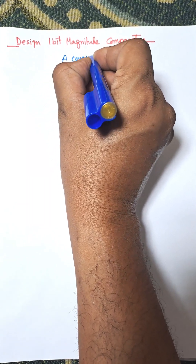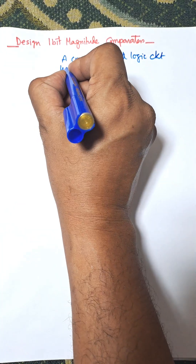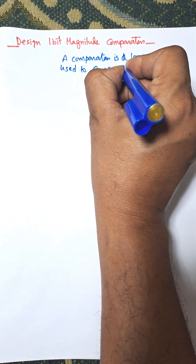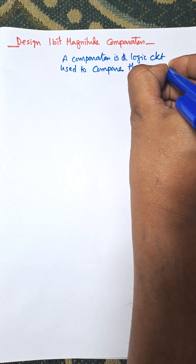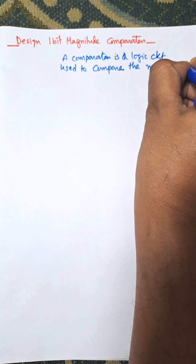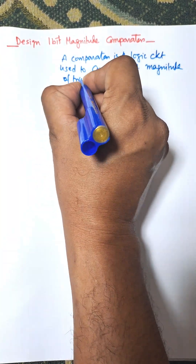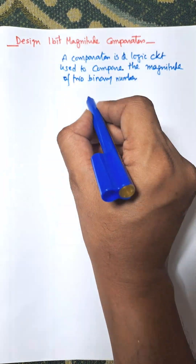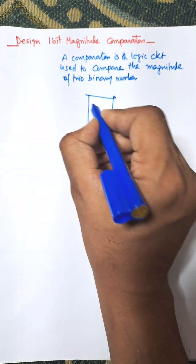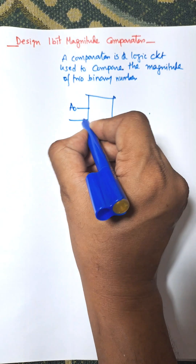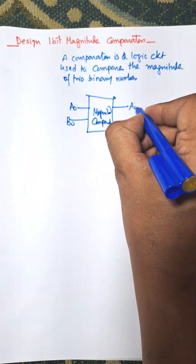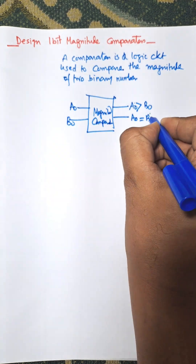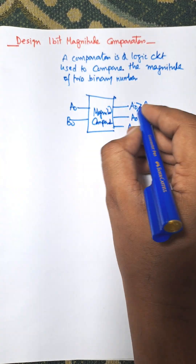A comparator is a logic circuit used to compare the magnitude of two binary numbers. For a one-bit magnitude comparator, the input is a0 and b0. The output will be either a0 greater than b0, a0 equal to b0, or a0 less than b0.